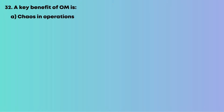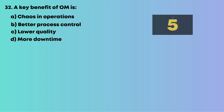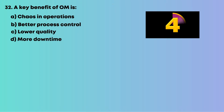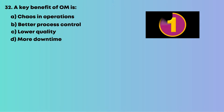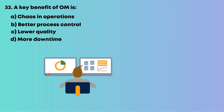Question 32: A key benefit of operations management is: A, chaos in operations; B, better process control; C, lower quality; D, more downtime. Processes are monitored for consistency. So the answer is B, better process control.